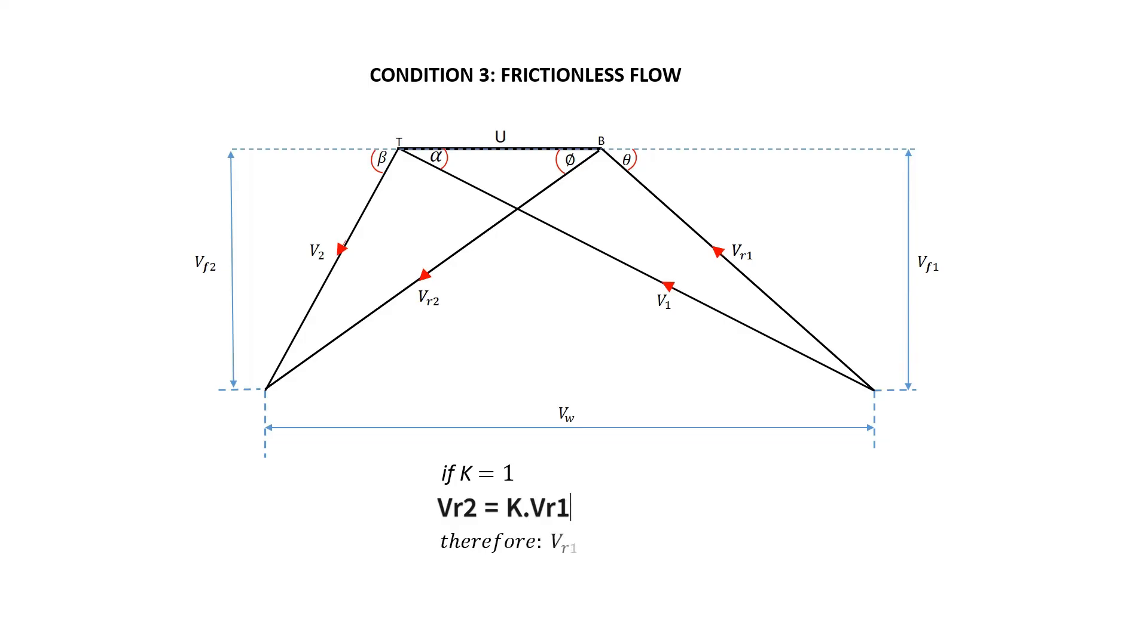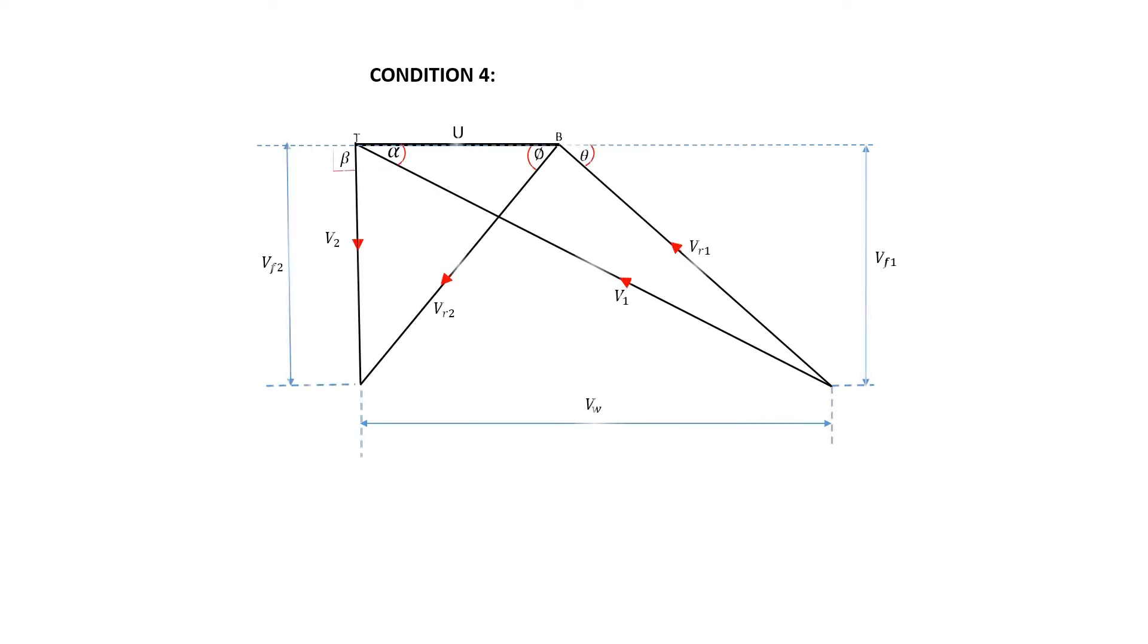The fourth condition is when there is an axial discharge. An axial discharge on the shaft means that the outlet angle of the turbine beta equals 90 degrees. Therefore, the absolute outlet velocity of the turbine V2 should be drawn vertically from the turbine point T on the left.